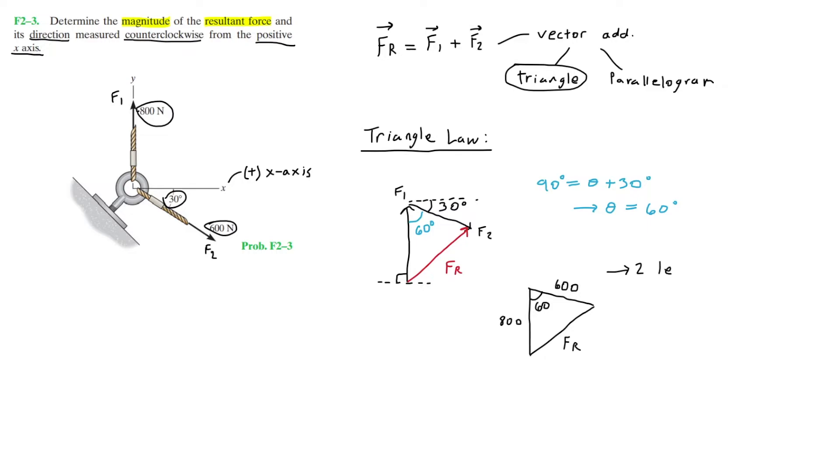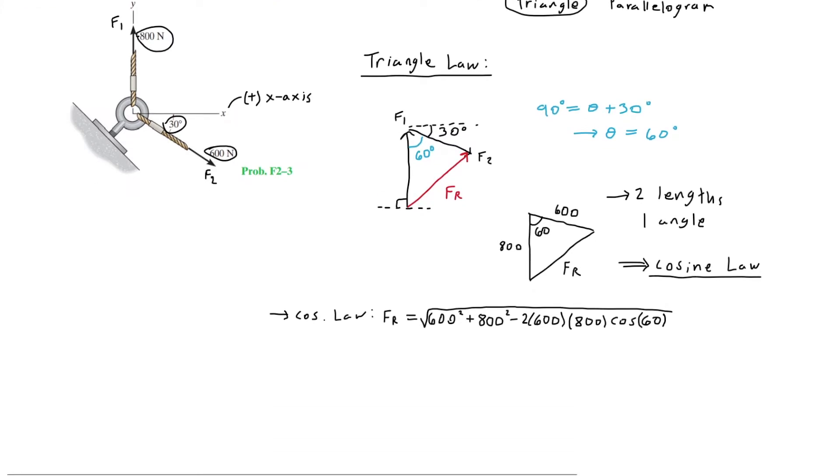As you can see, we know two lengths of this triangle and one angle. Hence we can use the cosine law to find FR. So that is the equation. All of this is roughly 721.1, so the magnitude of FR is approximately 721.1 newtons.